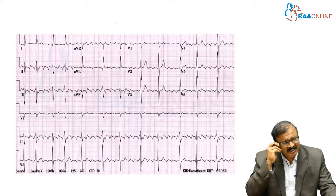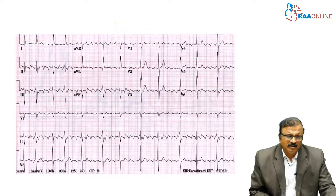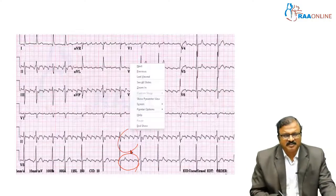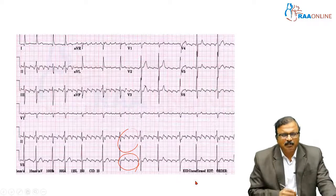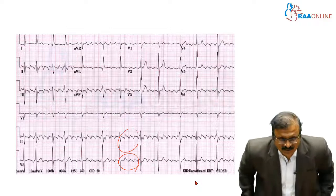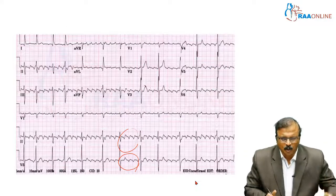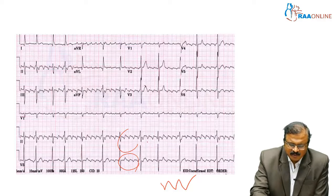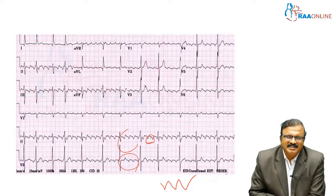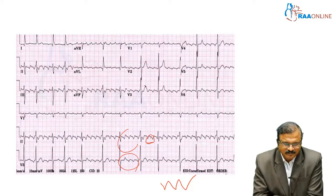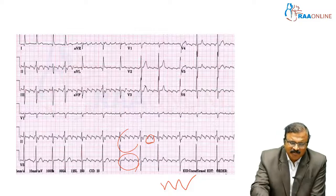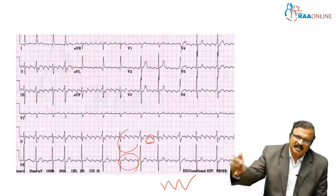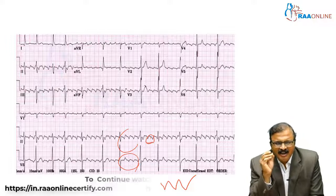The next ECG is also very easy to diagnose. This is a rhythm with some bizarre P waves — the P waves are not normal. Multiple inverted P waves with a sawtooth pattern. The P wave duration is one big box, meaning the atrial rate is 300. But the ventricular rate is only about 75 — almost a 4:1 AV block. Not all atrial impulses are conducted. There is a re-entry phenomenon causing this classical atrial flutter.